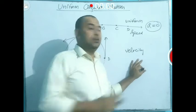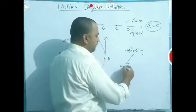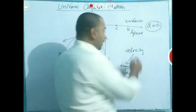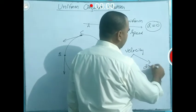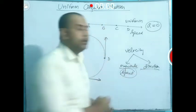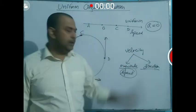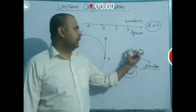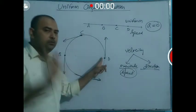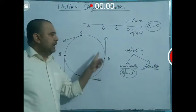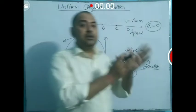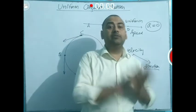Velocity has two components: one is the magnitude, which means the speed of the body, and the other is the direction. If either the magnitude or the direction changes, the velocity changes. Here, speed is constant, but at every point on the circle the direction is changing, so due to the change in direction, the velocity is changing.